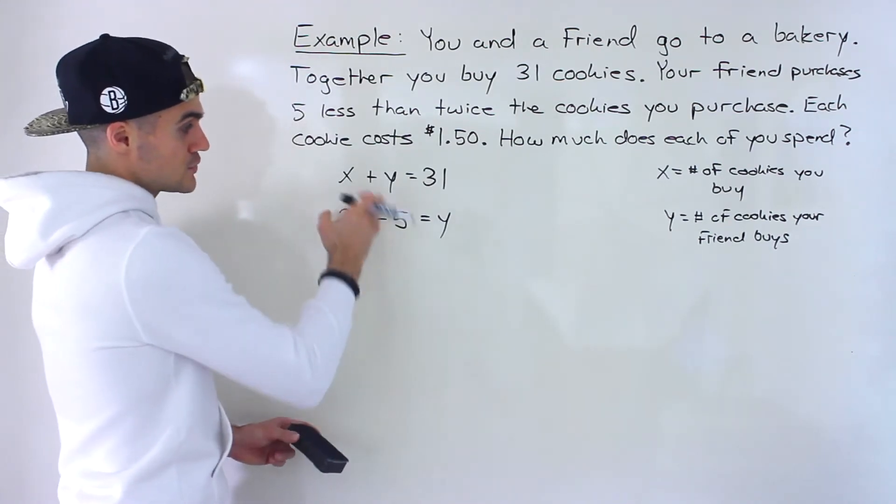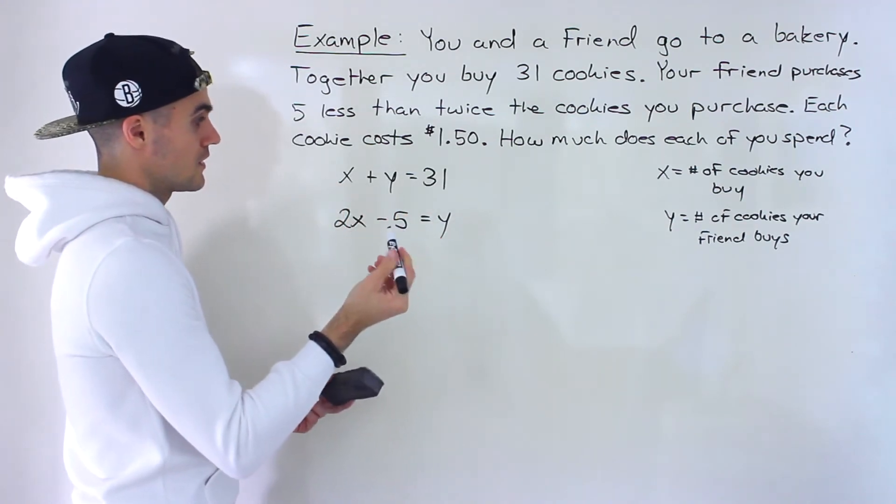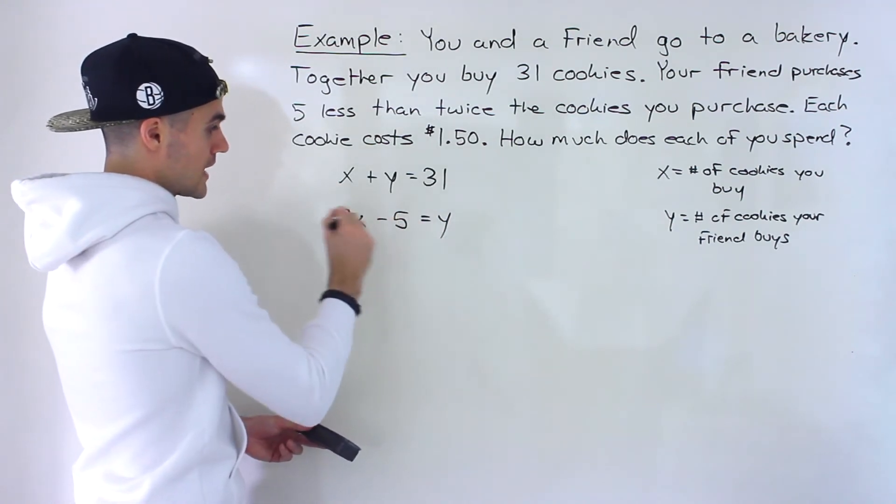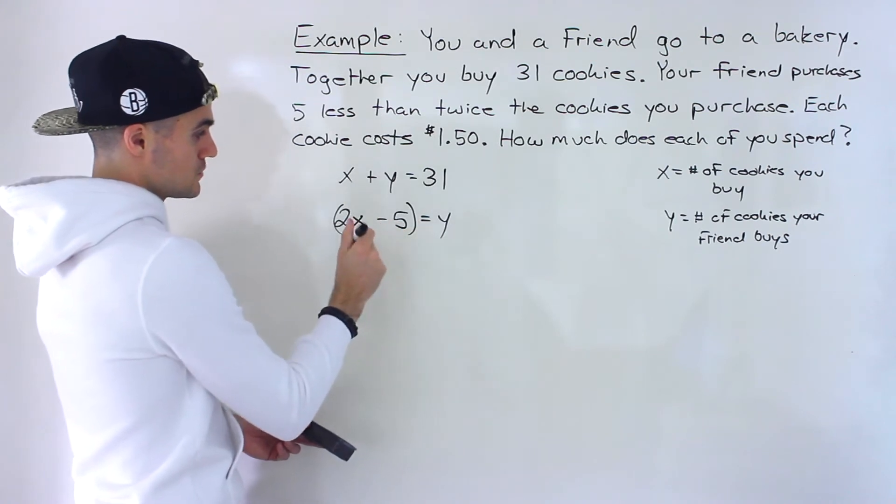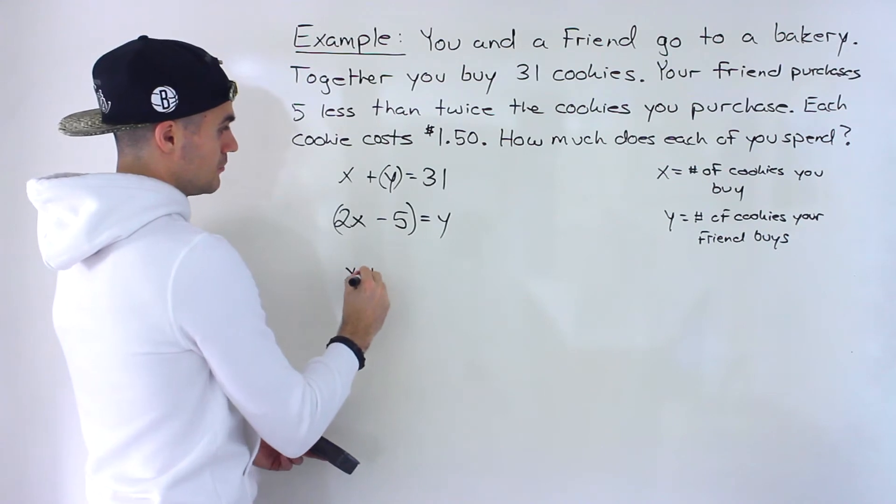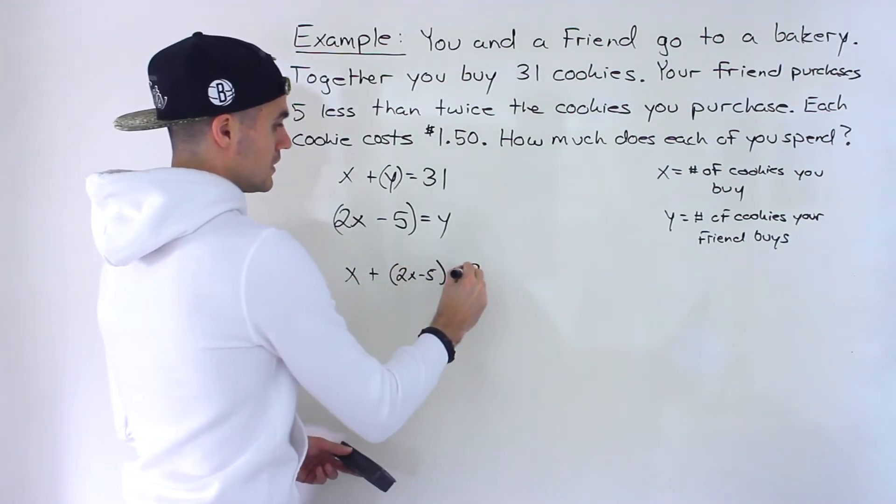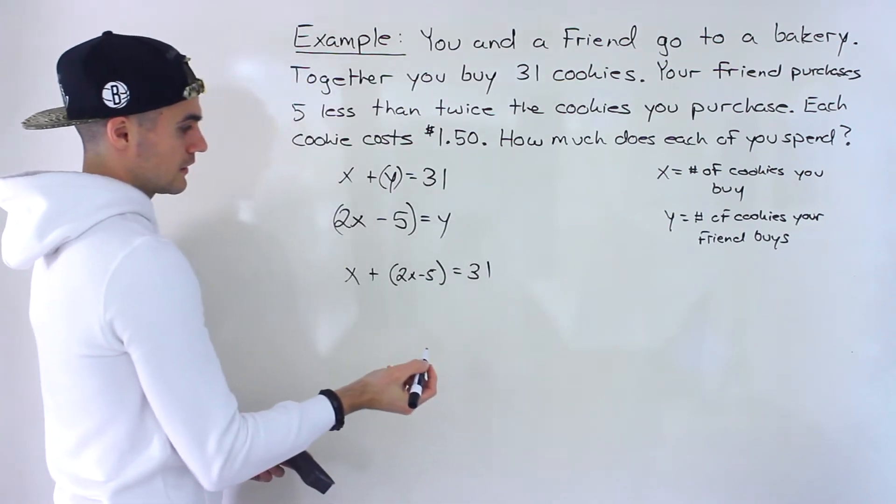And now we have two unknowns and two equations. So we could solve for them. And notice that the y is already isolated. So let's do substitution. We could take this 2x minus 5 and plug it in for this y. So we'll have x plus 2x minus 5 equals 31, like that.